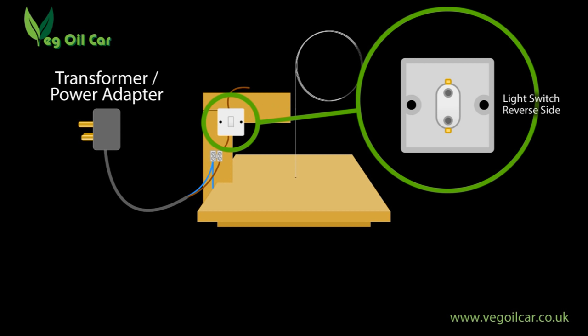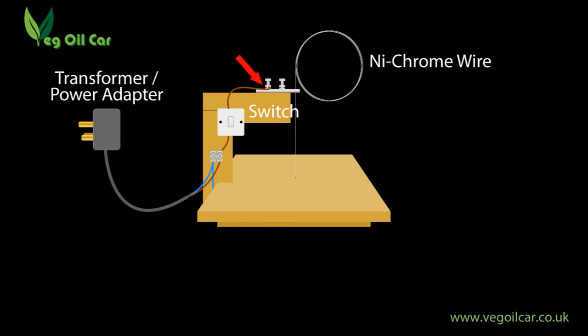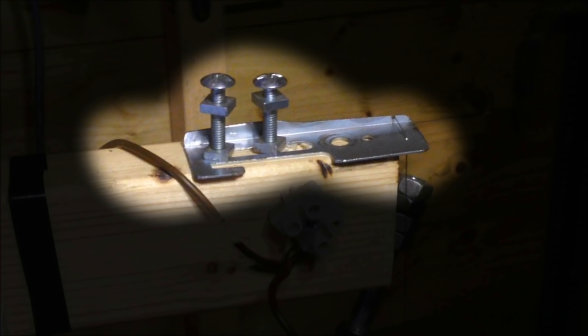You'll also see here that I've added a switch. Now I happen to have an old domestic light switch to hand so I use that. You will need a switch as you shouldn't leave the cutter turned on when it's not in use as it will very quickly burn out the nichrome wire.